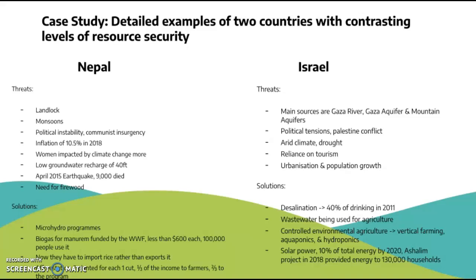Nepal also has a huge reliance on firewood for energy. Solutions include micro-hydro programs using biotechnology to address water scarcity with local solutions, and biogas using manure funded by the WWF — costing less than $600 each and used by 100,000 people, a very effective local strategy. Nepal now imports rice rather than exporting it due to food insecurity. Afforestation projects plant two trees for each one cut, with one third of income going to farmers and two thirds to the program.